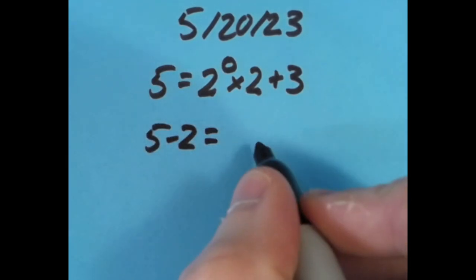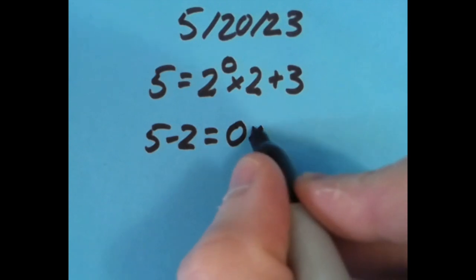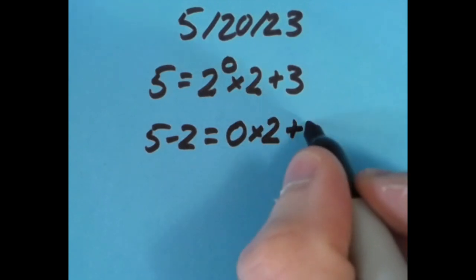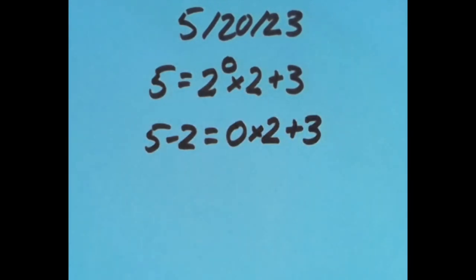So here I said 5 minus 2 is 3, and then I did 0 times 2 to get 0, and 0 plus 3 is also 3.